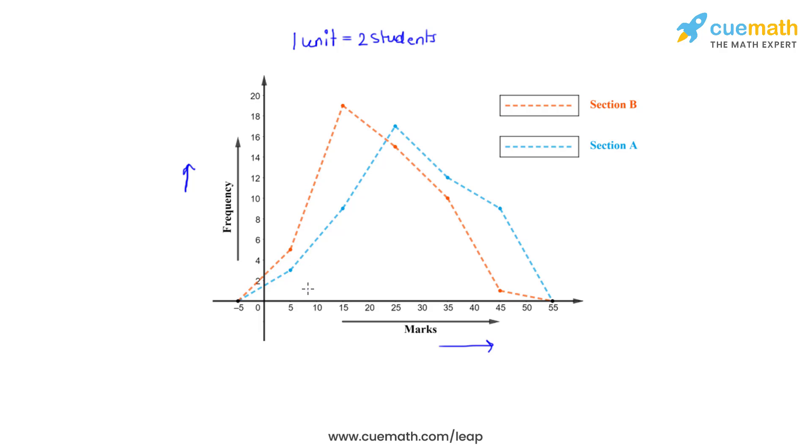It can be observed that the performance of students of Section A is better than the students of Section B, as Section A shows more students securing marks between 40 to 50 class and 30 to 40 class.